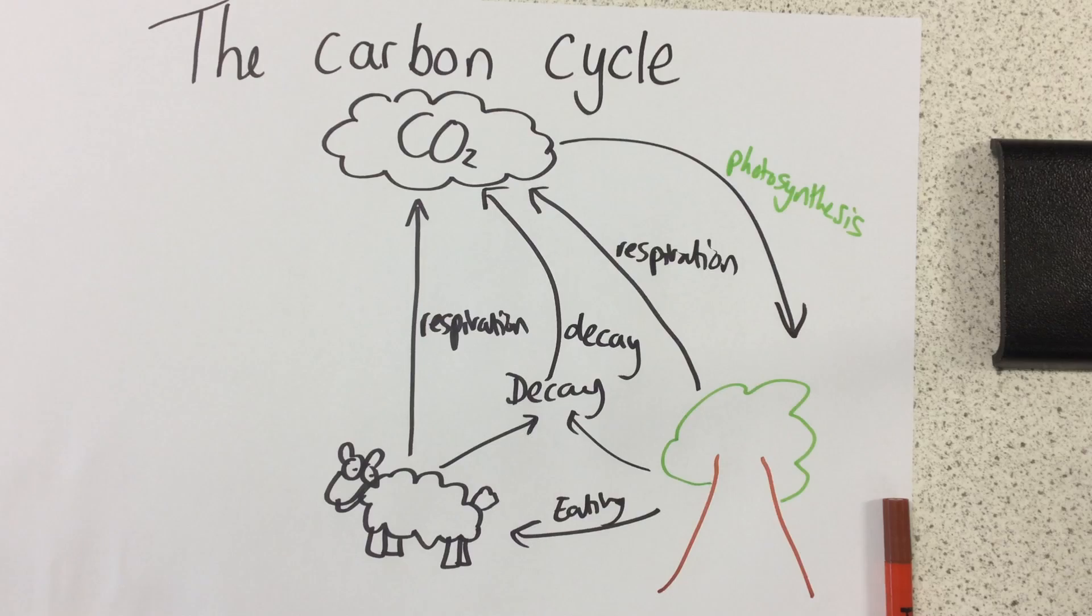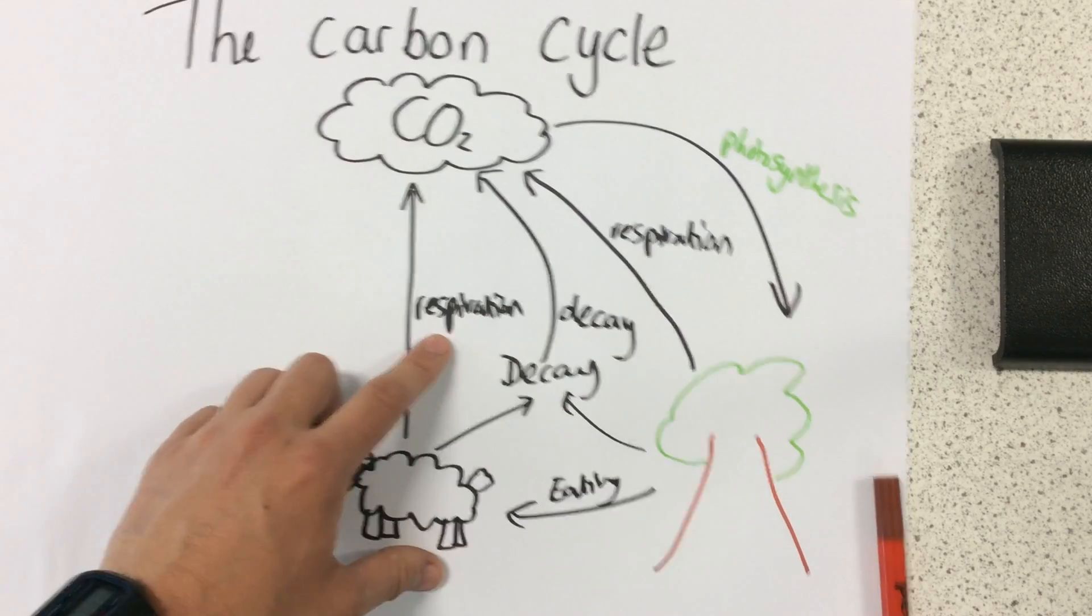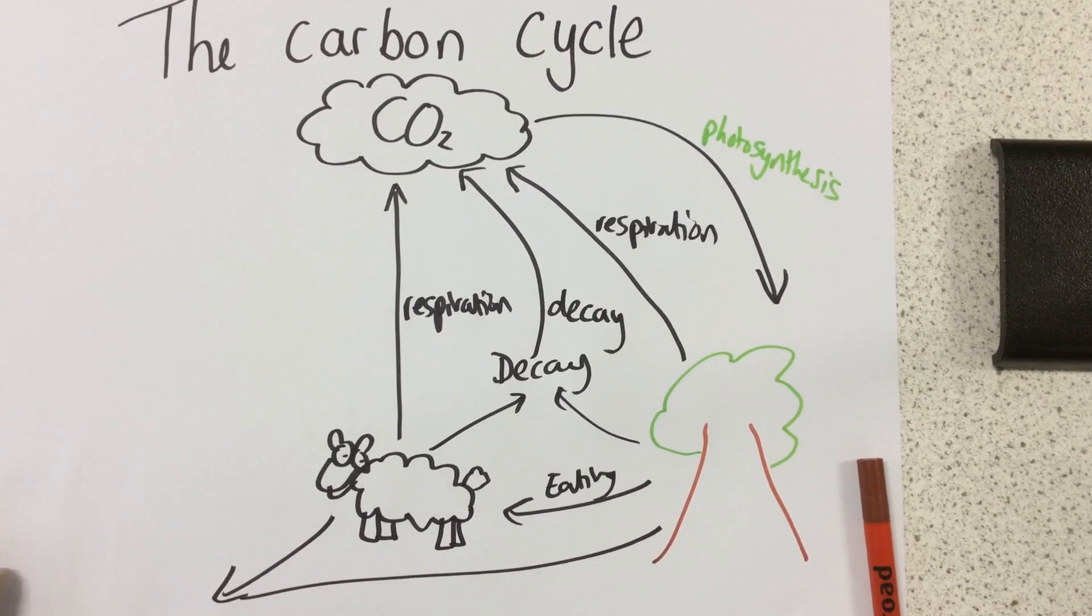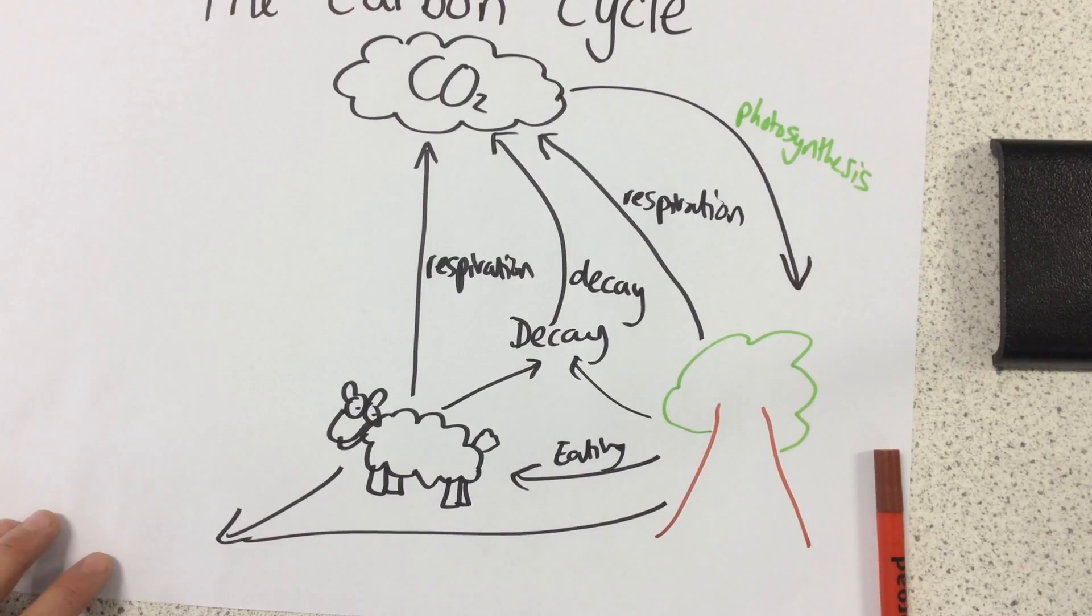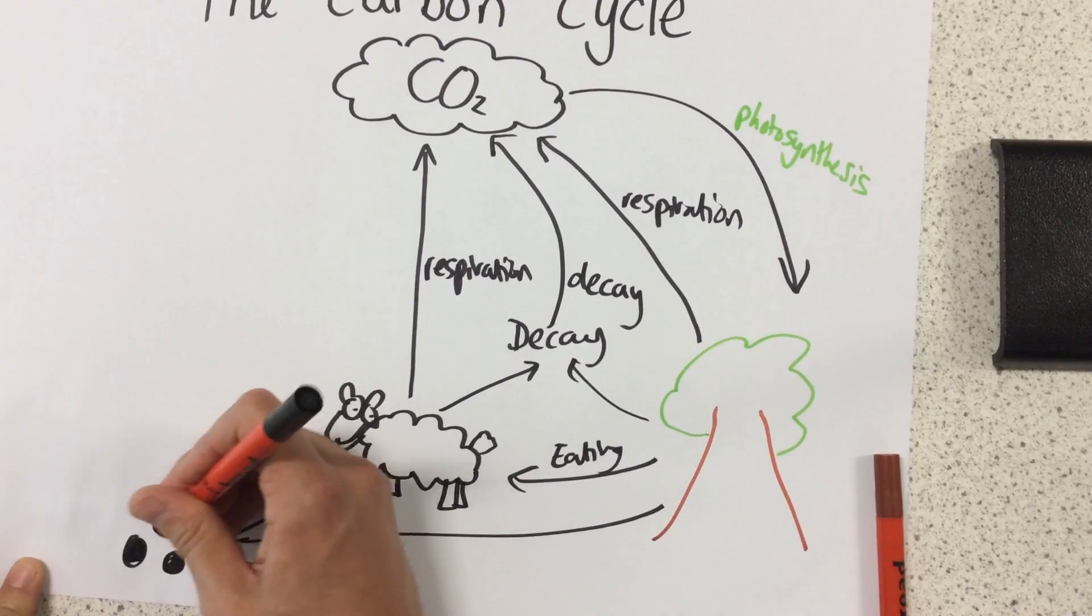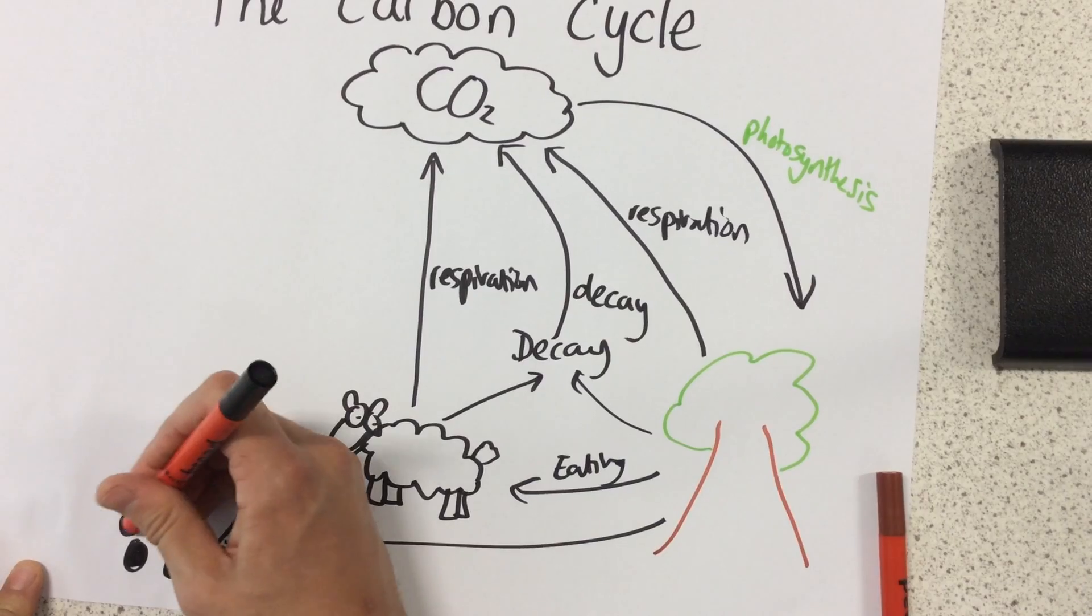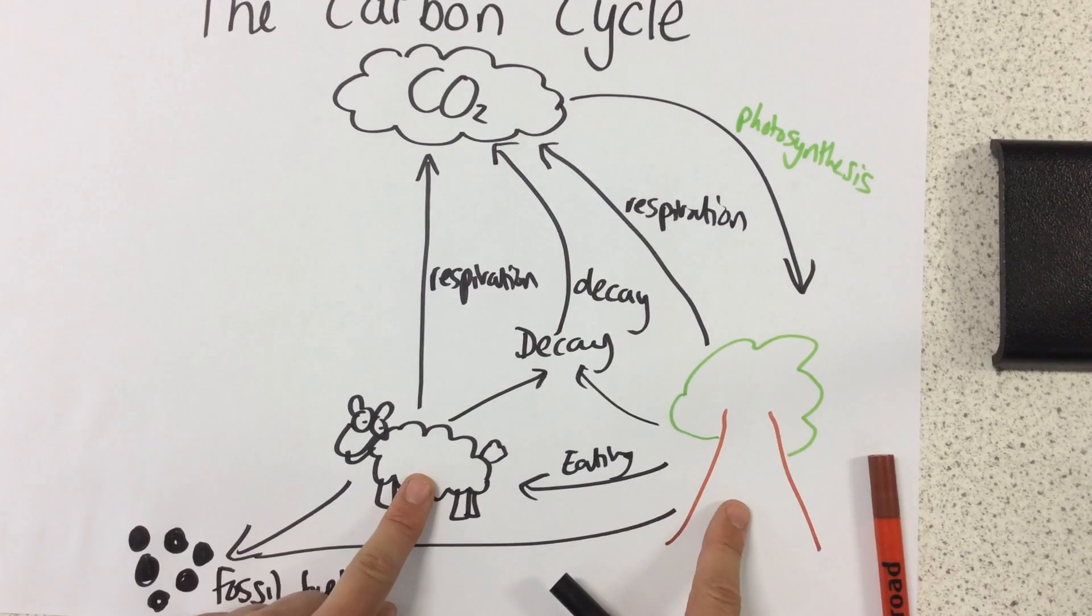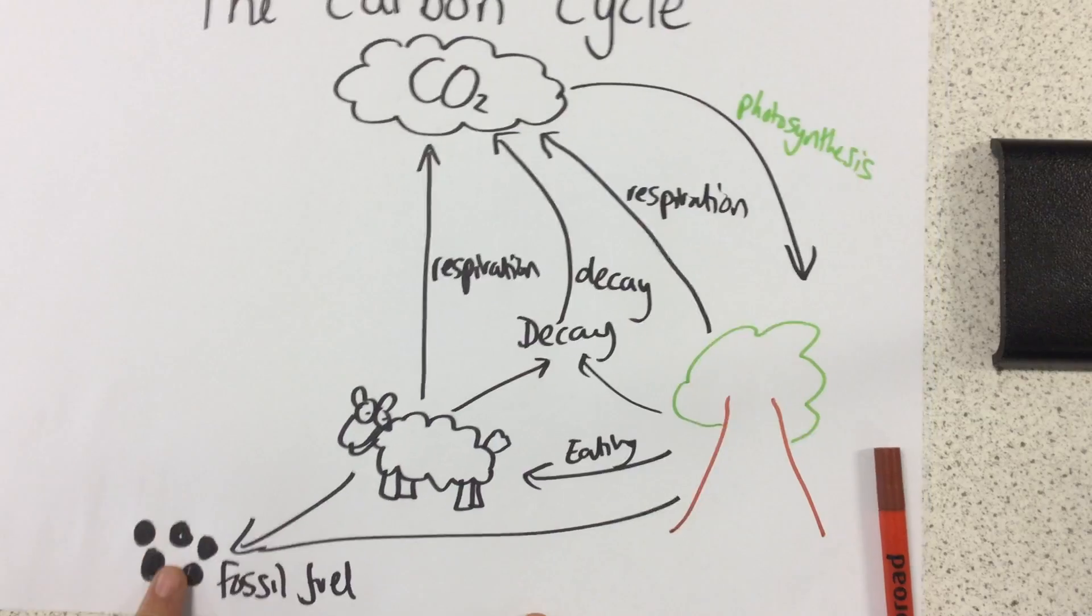We can see there's lots of things returning carbon dioxide to the atmosphere. Now what can also happen to these sheep and these plants is if they're in the right conditions, over millions of years of heat and pressure, they can actually be turned into fossil fuels such as coal, oil, and natural gas. So again, that carbon has been moved from these plants and animals into the fossil fuels. The carbon is now stored here.